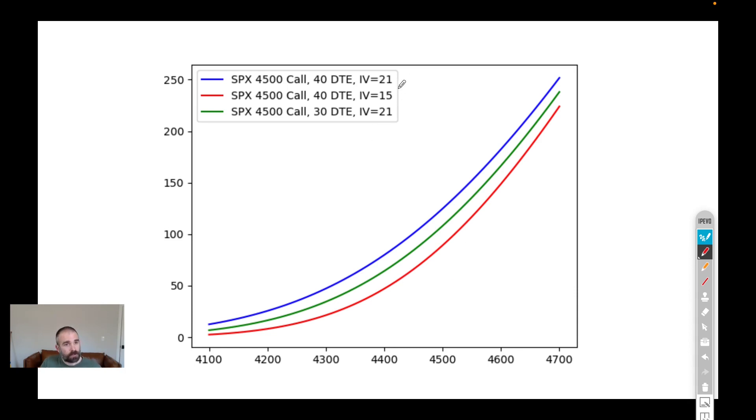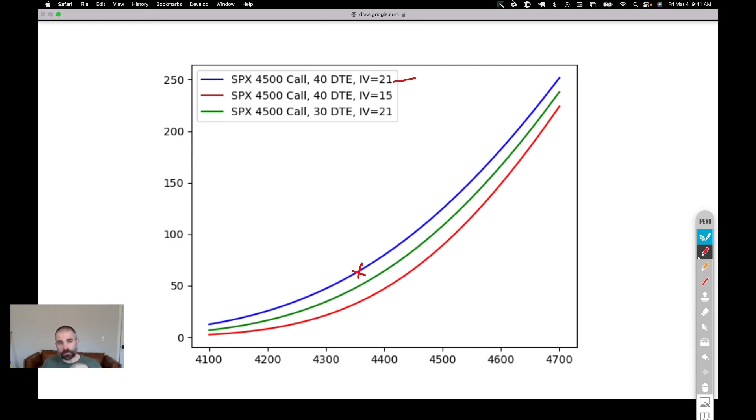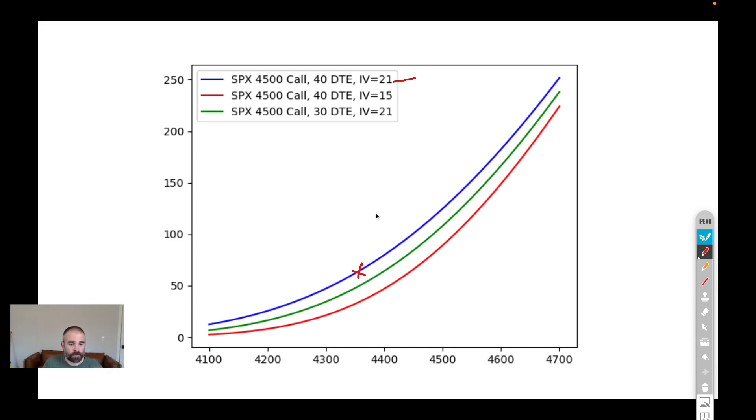What we've done here is we've plotted a single call option and done some estimates on what happens if you move time and volatility around. In blue is basically what this 4,500 call is worth today. With the S&P somewhere near 4,350, it has an implied volatility of 21 with about 40 days to expiration. If you wanted to buy a call that has the Fed kind of baked into it, as well as some time to have geopolitical issues resolved, 40 days to expiration is a reasonable amount of time duration on that call.